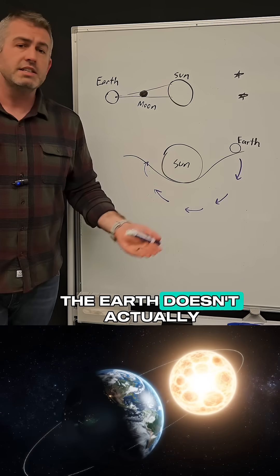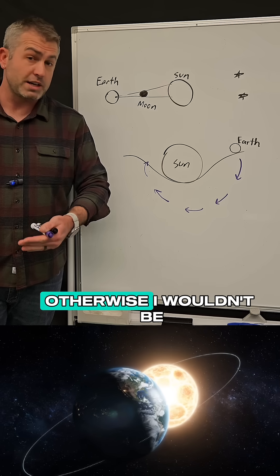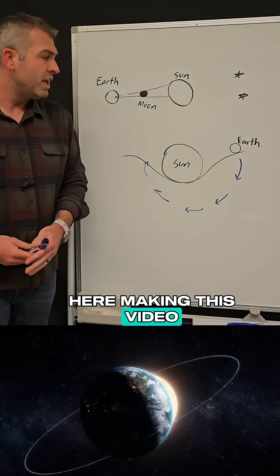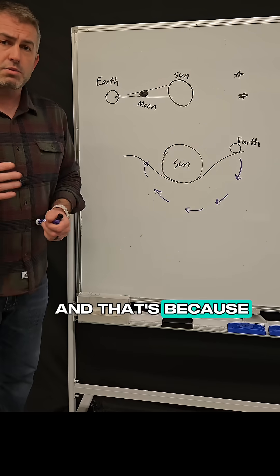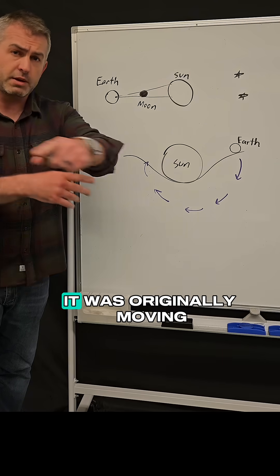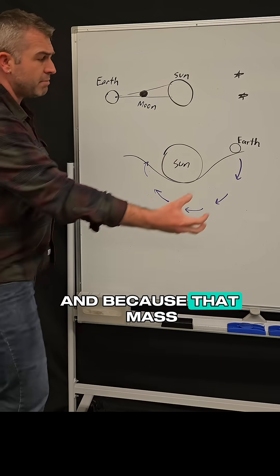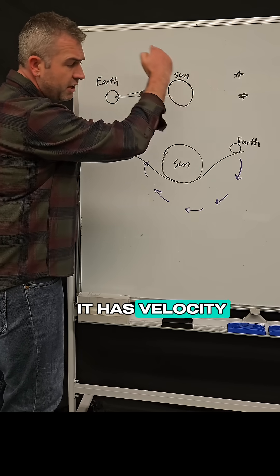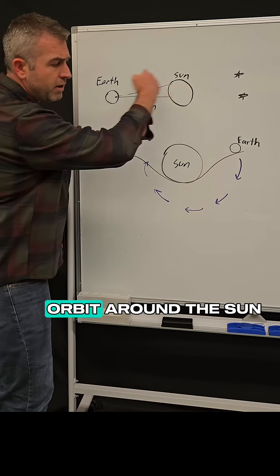But of course the Earth doesn't actually fall into the Sun, otherwise I wouldn't be here making this video. Instead the Earth orbits the Sun and that's because when the Earth entered the solar system, it was originally moving and because that mass has motion, it has velocity, it's going to continue to orbit around the Sun.